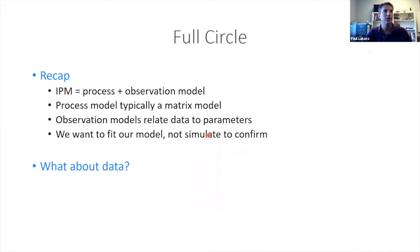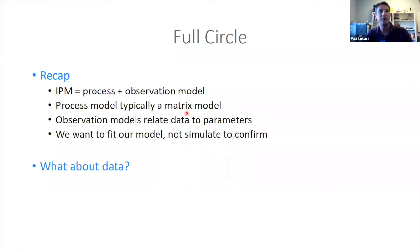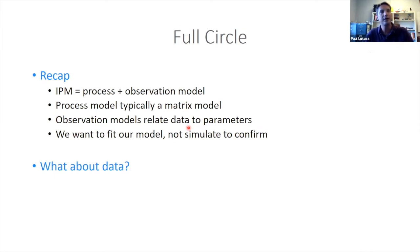Quick recap: our integrated population model is a process of all our biology linked to observations. The process is typically some sort of matrix model, and the observations are based on the type of data collected — a statistical model based on data collection. We want to fit our model, not just simulate to confirm preconceived ideas, because fitting allows us to test our assumptions and hypotheses where simulations do so less.